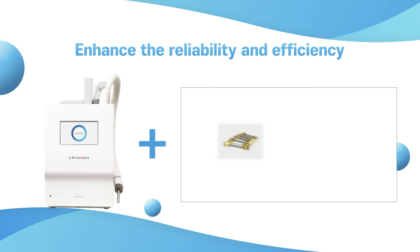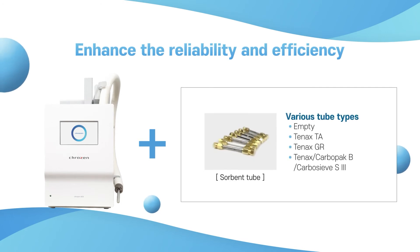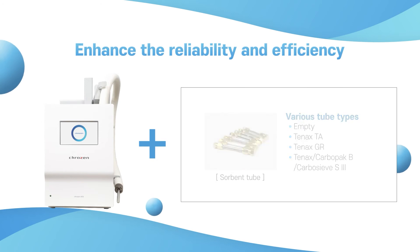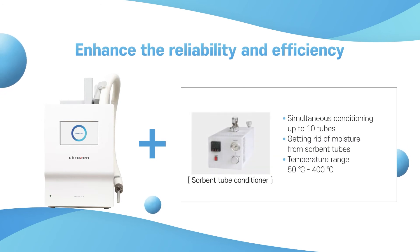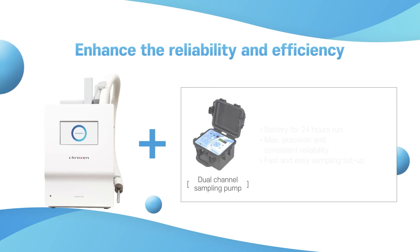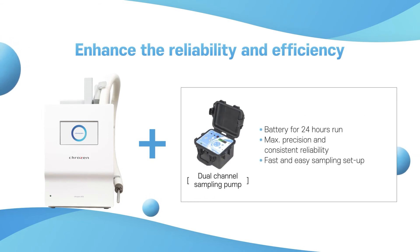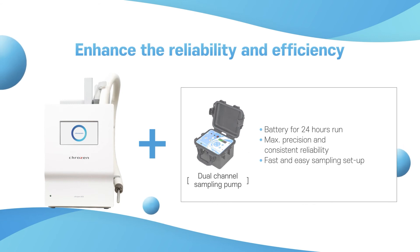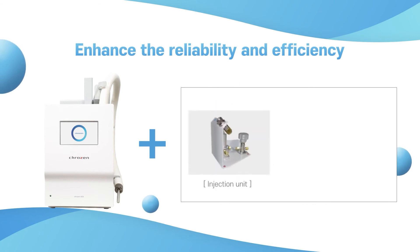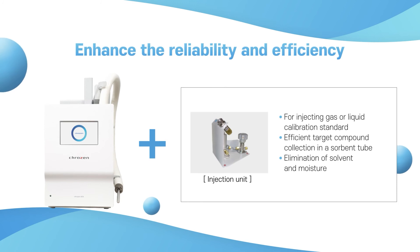Various smart tools are available for Crozen ATD. First, sorbent tubes — many kinds are available depending on target compounds. Next, sorbent tube conditioner — this efficiently removes any residues or moisture in the sorbent tube before the next analysis. The dual channel sampling pump collects gaseous samples into up to two sorbent tubes simultaneously with greater precision. The injection unit loads gas or liquid standards into the sorbent tube while removing unnecessary solvents.